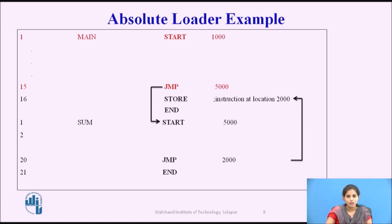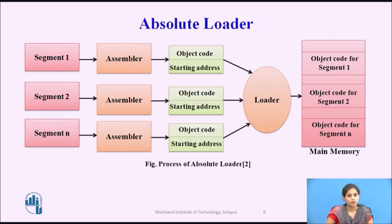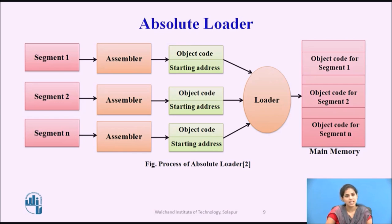The entire process is shown in the following figure. In this figure, segments are passed to the assembler. Segment 1 is given as input; the assembler generates the object code, and along with the starting address, it is passed to the loader, which loads the object code into main memory. Similarly, segment 2 is given as input, the assembler generates its object code, and the loader loads it into main memory at its starting address. This process repeats for all n segments.